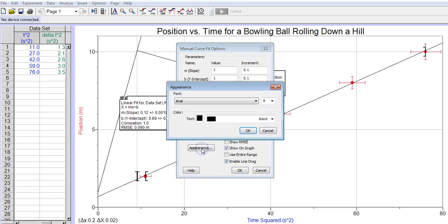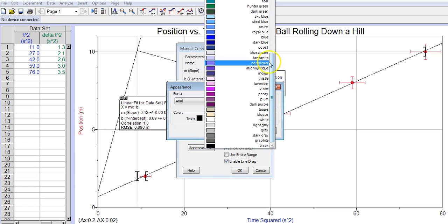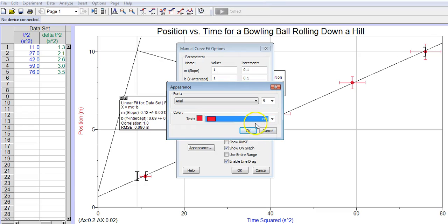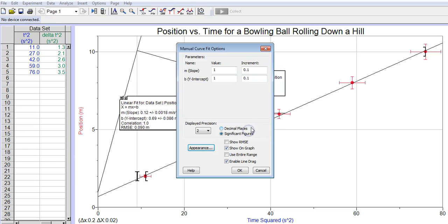I'm also going to click on Appearance, and I'm going to change the color to red, just to help differentiate it from the other graph, from the best fit line on this graph. So that's everything I need.